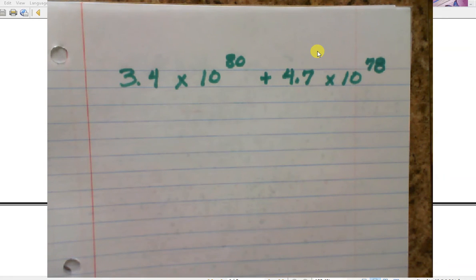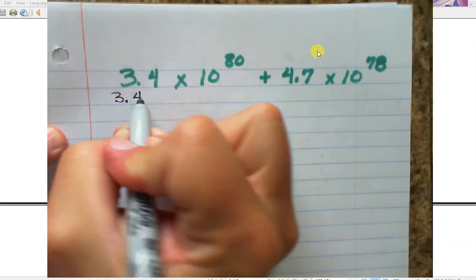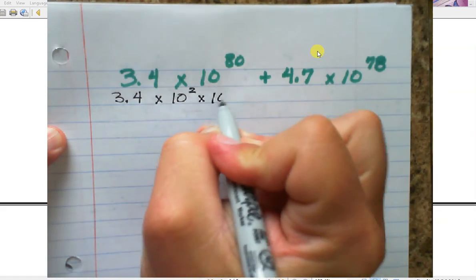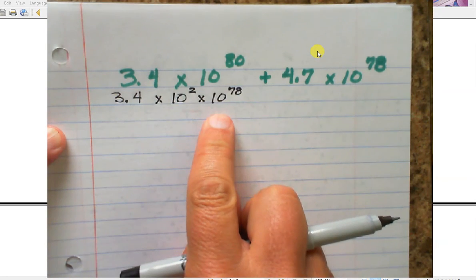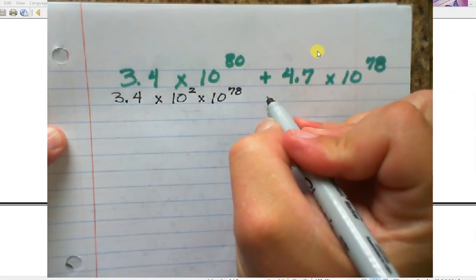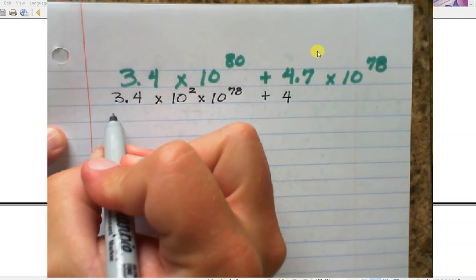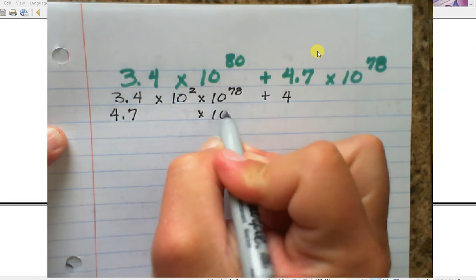Plus 4.7 times 10 to the 78th. So watch what I'm gonna do here. And see if this makes sense. This is 3.4 times 10 to the second times 10 to the 78th. Well, that's 10 to the 80th.